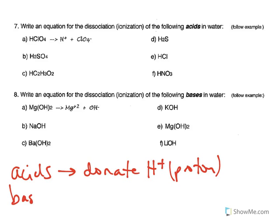And then if we're talking about bases, we can look at those in two different ways. One, a base will dissociate to produce hydroxide ions if it's in an aqueous solution. Another is that bases will accept the hydrogen ion.